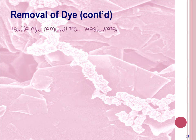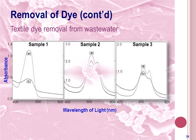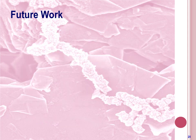In the case of textile dye removal from industrial wastewater, UV spectroscopy analysis gave absorbance curves indicating the dye removal efficiency of INP for different fabric dye samples.